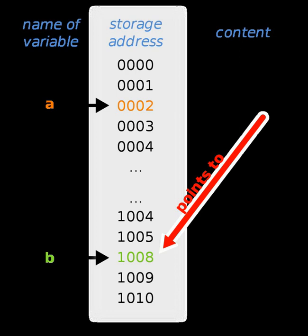In many languages, pointers have the additional restriction that the object they point to has a specific type. For example, a pointer may be declared to point to an integer; the language will then attempt to prevent the programmer from pointing it to objects which are not integers, such as floating point numbers, eliminating some errors. For example, in C, money would be an integer pointer and bags would be a char pointer. The following would yield a compiler warning of 'assignment from incompatible pointer type' under GCC, because money and bags were declared with different types.